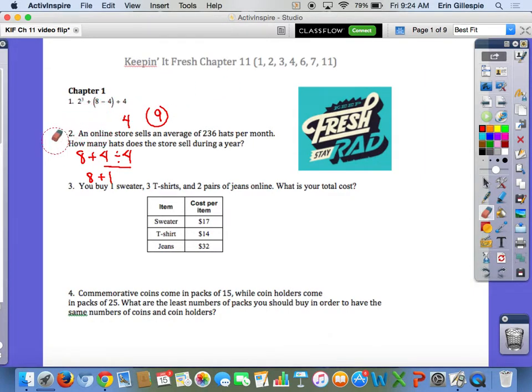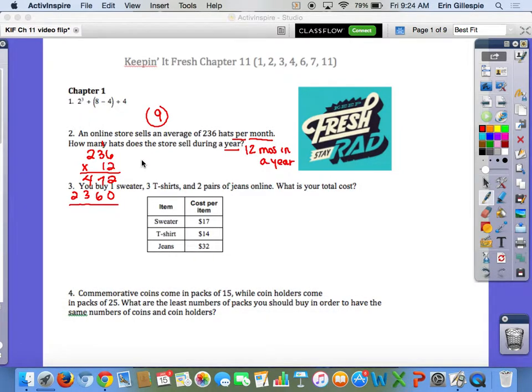Number 2 says an online store sells an average of 236 hats per month. How many hats does the store sell during a year? So look at your units here, that's important. 236 per month, but how much are they going to sell in a year? Well, you have to know that there are 12 months in a year. So if it's 236 every month, that means you want to do 236 times 12. So if you do that, you should get 2,832 hats.